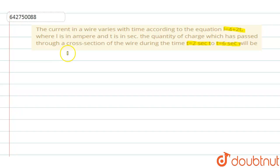Here also you are given an equation for current. Given the equation of current, you are supposed to find the quantity of charge which has passed between the time interval 2 to 6 seconds.